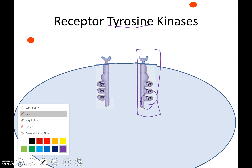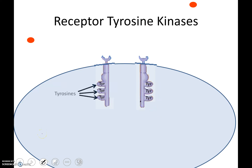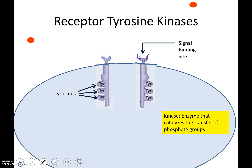When we look at how this works, here we have a signal binding site. This is where the ligand or the signaling molecule is going to attach. These red circles represent the signaling molecules, and examples of these in real life would be like insulin or growth factor.